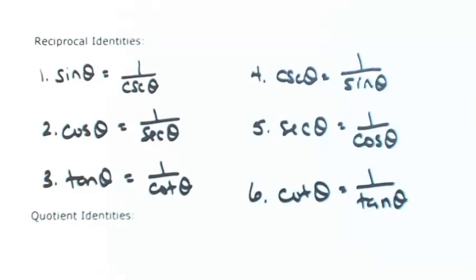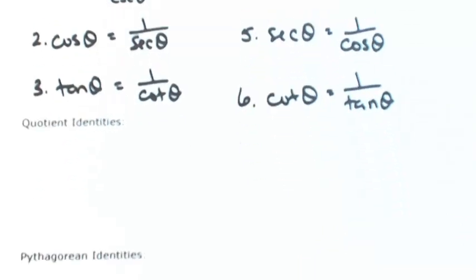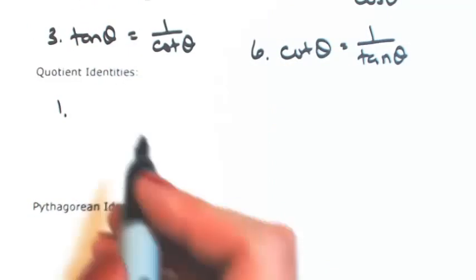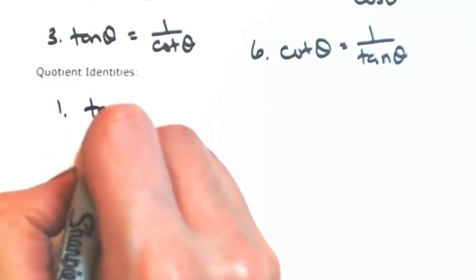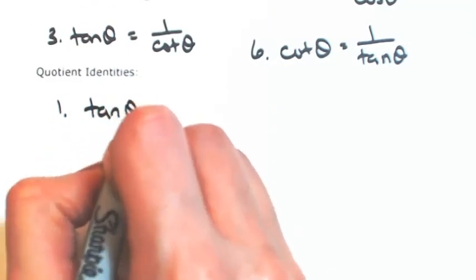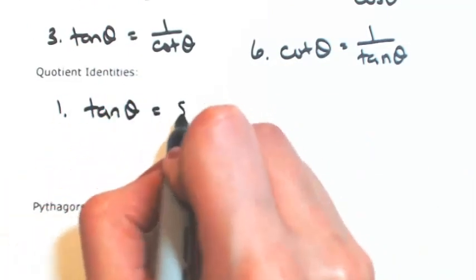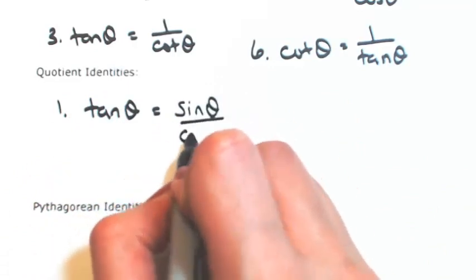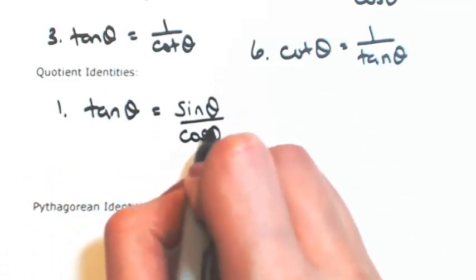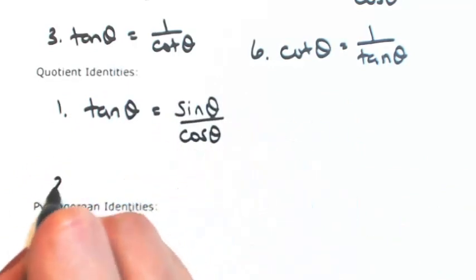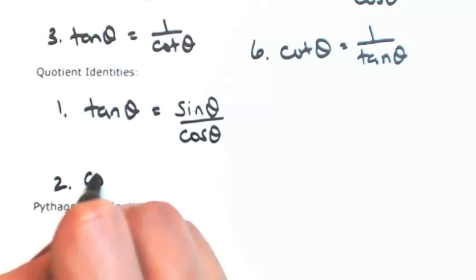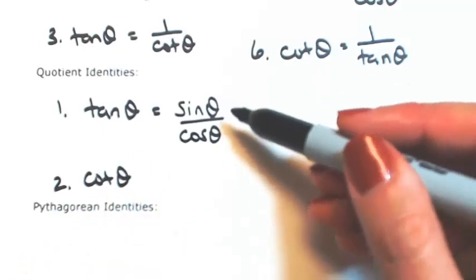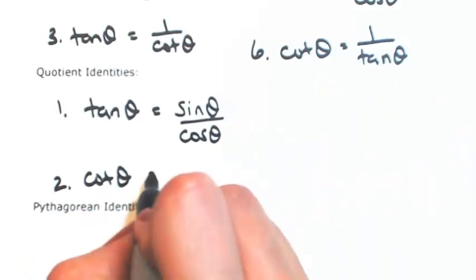Another set of identities are the quotient identities, which define tangent and cotangent in terms of sine and cosine. Tangent of theta is sine over cosine. Cotangent of theta is just the reciprocal of tangent, so cosine over sine.